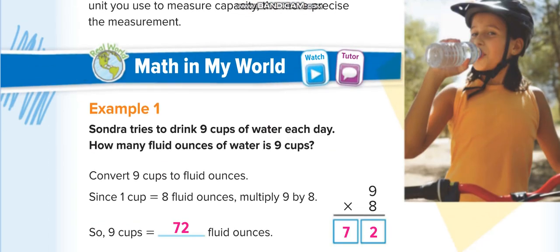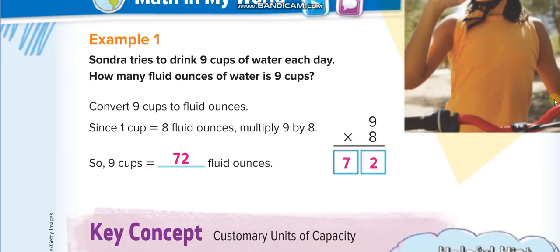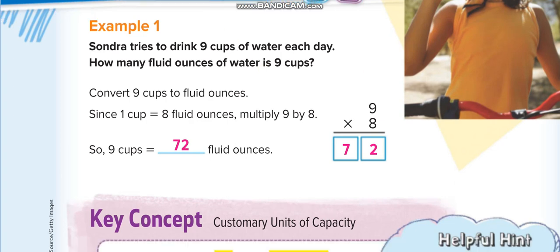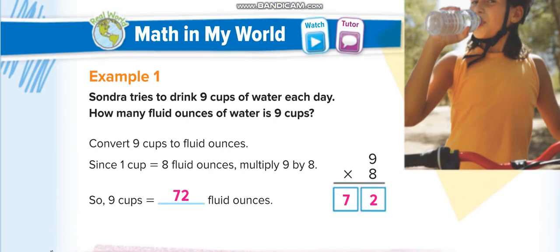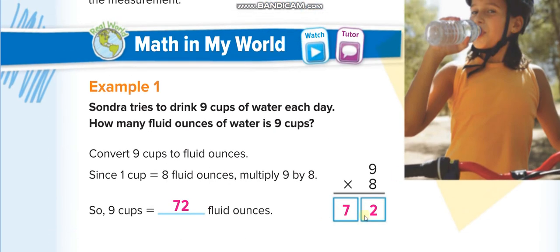First problem: Sandra tries to drink 9 cups of water each day — how many fluid ounces is that? One cup equals 8 fluid ounces, so 9 cups times 8 equals 72 fluid ounces.